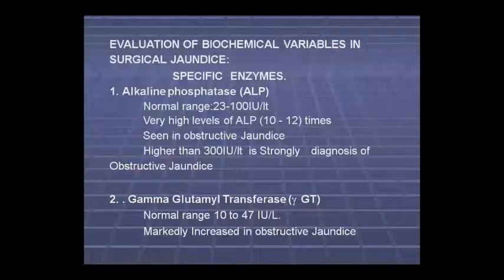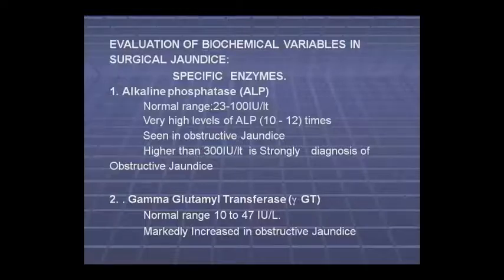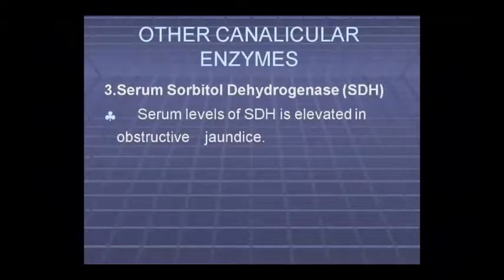Gamma glutamyl transferase — Gamma GT — can also be used to see this. The normal range is 10–47 IU per liter, and it markedly increases in obstructive jaundice. These are canalicular enzymes.